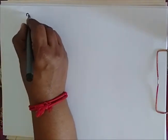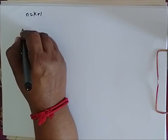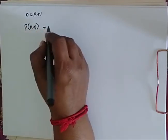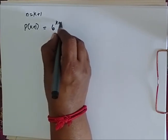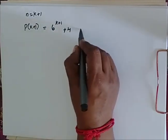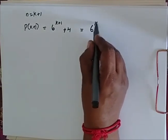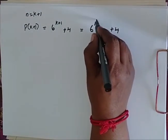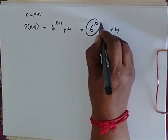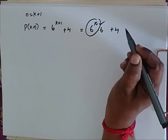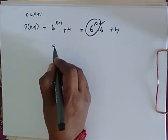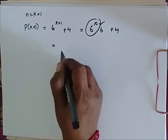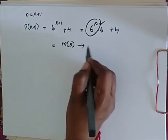Now, when n is equal to k plus 1, my P of k plus 1 is equal to 6 power k plus 1 plus 4. This can be written as 6 power k into 6 plus 4. I have found an expression for 6 power k in terms of 5, so now I am going to replace that with 5m minus 4.